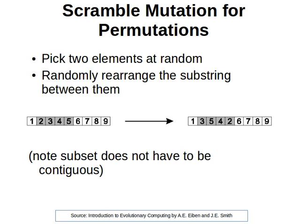Hello again. The final mutation method we're going to look at is called scramble mutation. The idea is to have one input chromosome, pick two elements at random, and then randomly rearrange the substring — or subarray — between them. The idea is to scramble and randomize the subarray between them.